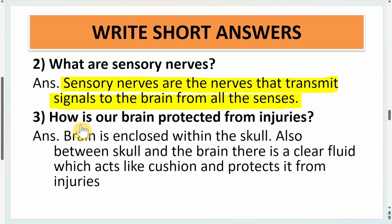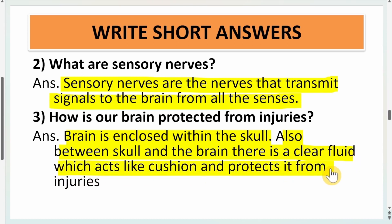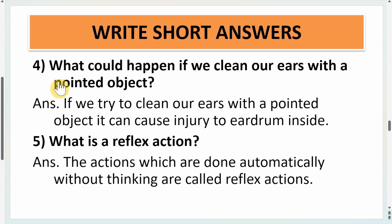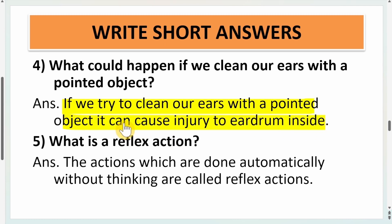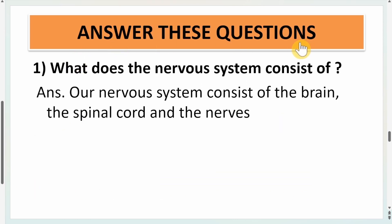Third question: how is our brain protected from injuries? The brain is enclosed within the skull, and between the skull and the brain there is a clear fluid which acts like a cushion and protects it from injuries. Fourth question: what could happen if we clean our ears with a pointed object? It can cause injury to the eardrum, so we should never clean our ears with a pointed object. Fifth question: what is reflex action? Actions which are done automatically without thinking are called reflex actions.